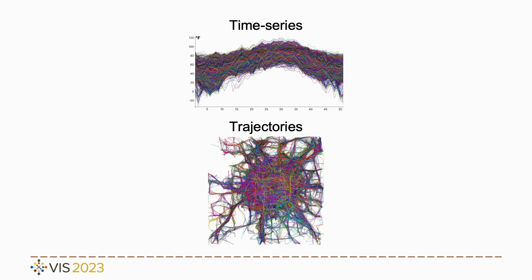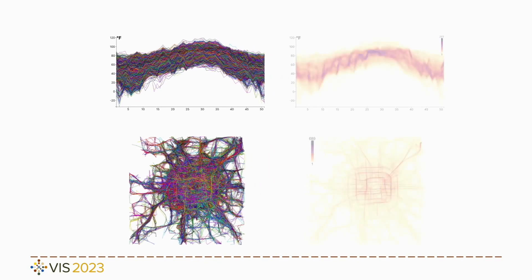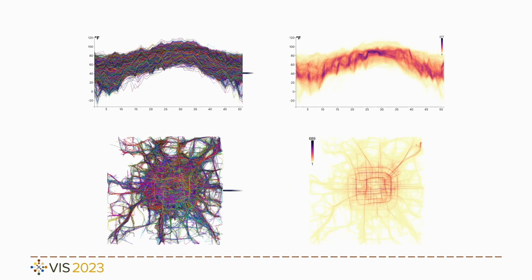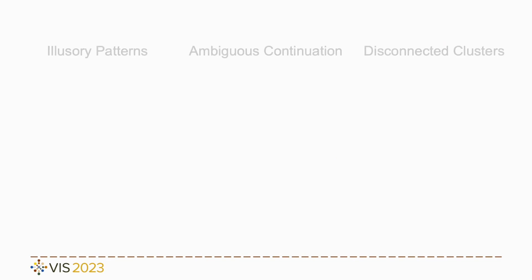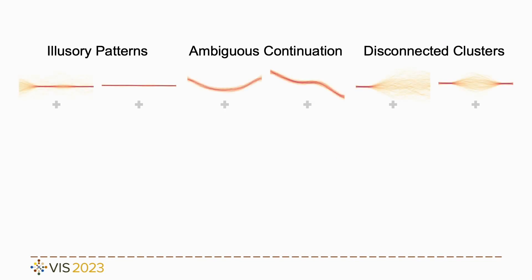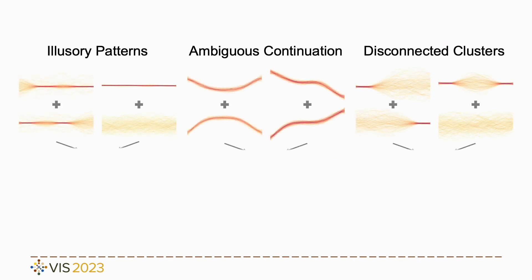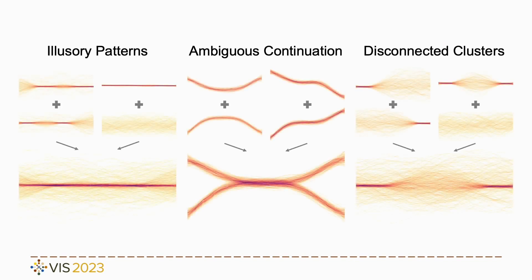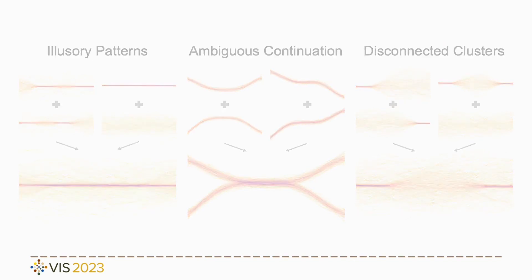Clutter arises when visualizing a large number of lines, encompassing both time series and trajectories. Line-based density plots can eliminate clutter, yet they also introduce ambiguity. Ambiguity implies that distinct underlying lines can yield similar patterns.